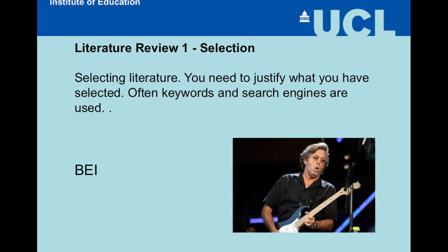The first is around the selection of the literature. Unlike some magazine articles where the writer simply selects material that bolsters their argument, you are going to engage with the literature — finding what's out there, material that may support your views or challenge them. This is usually done using keyword searches, where keywords are put into search engines to throw up relevant literature. We tend to use two common search engines: the British Educational Index (BEI) and the American equivalent, ERIC.